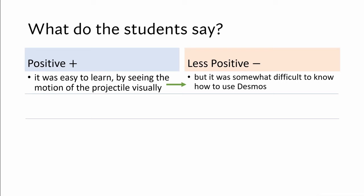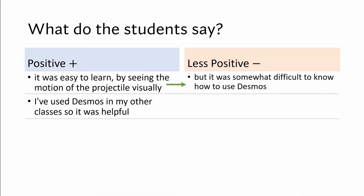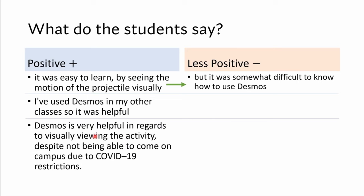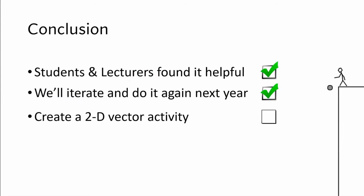So what did the students think? We asked a couple of short survey questions about their experience with these activities at the end of term. Key feedback: it was easy to learn by seeing the motion visually — which is exactly what we wanted. It was somewhat difficult to know how to use Desmos, which is less positive, but if they're using it in other classes the learning gradient is easier. Desmos is very helpful for visualization and being able to do it on their own time at home due to COVID. In conclusion, both students and lecturers found it helpful.